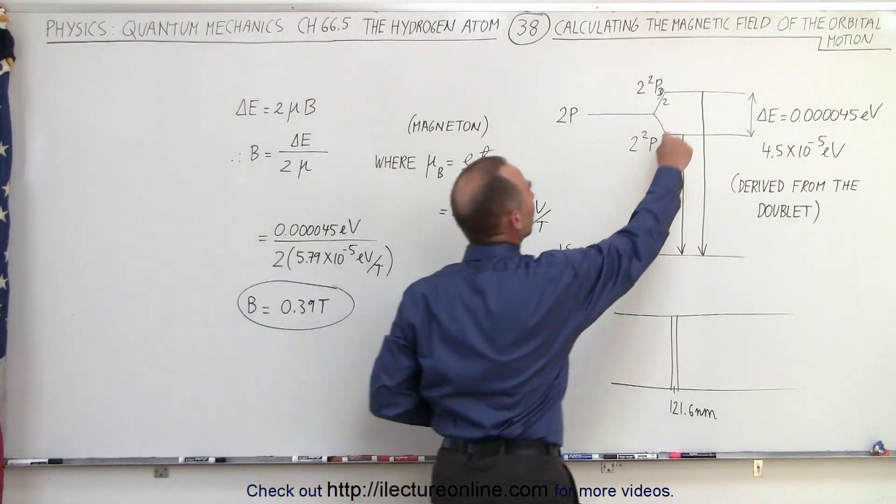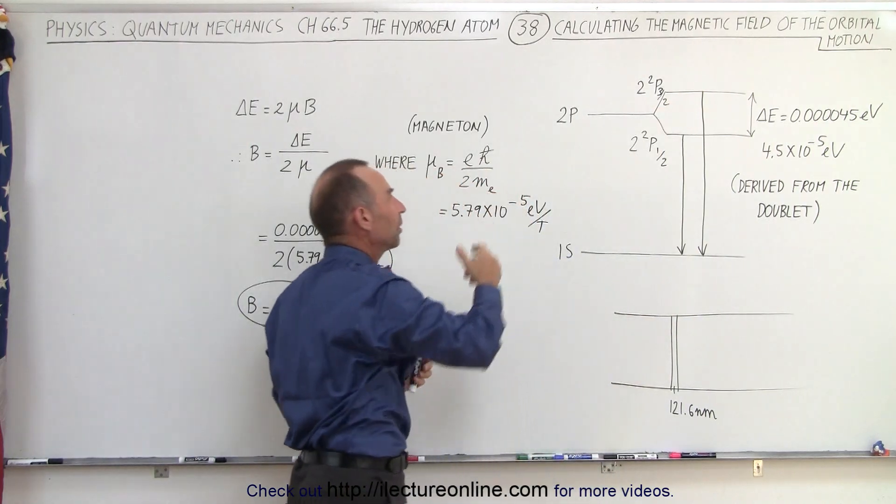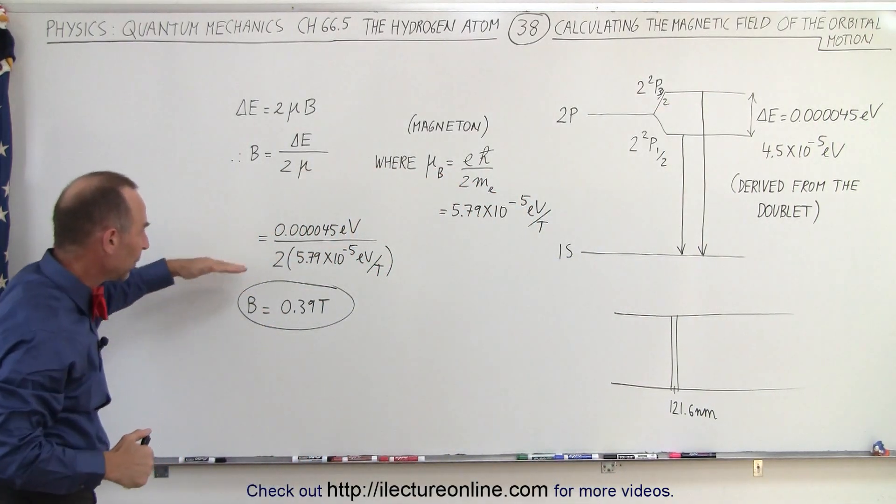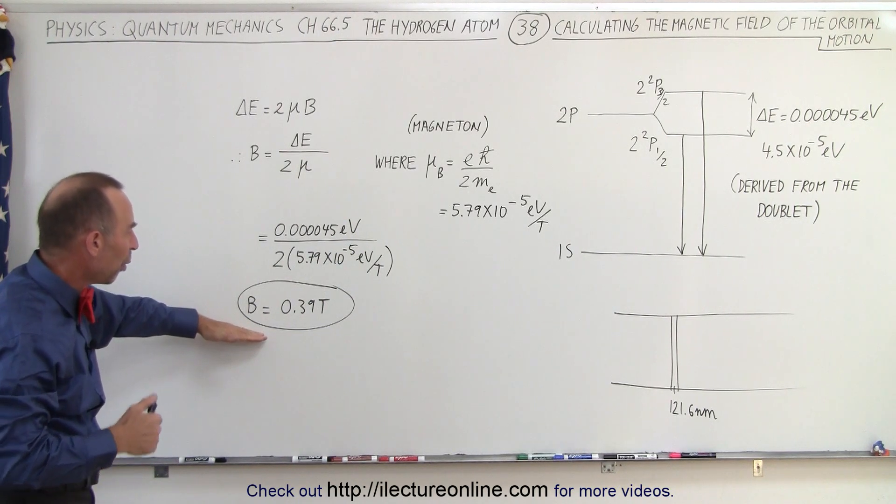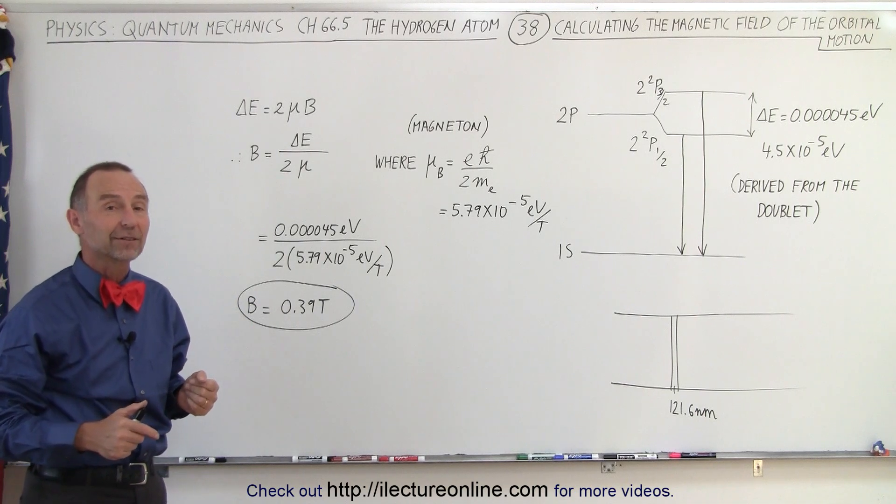Of course we have divided by 2 because we have the two difference in the energy from the normal level if there was no splitting. And then when we calculate that it ended up to be 0.39 teslas. That's actually a fairly powerful magnetic field.